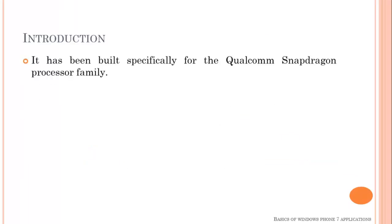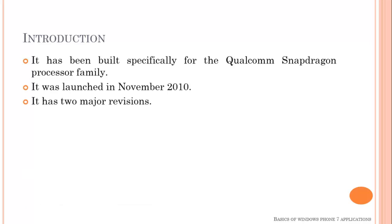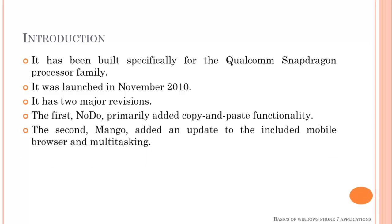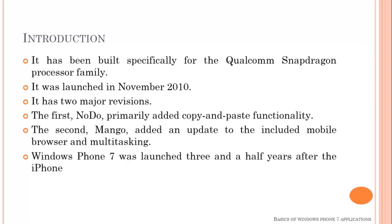Windows phone application was initially designed for Qualcomm Snapdragon processor in 2010. Initially, it was designed for two major reasons. The first was NoDo, which had the copy and paste functionality. The second was Mango, which had the functionality of mobile browser and multitasking. The Windows phone application was developed after three and a half years of iPhone.